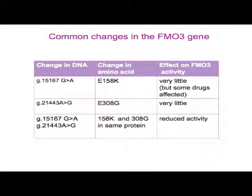What might be the consequences of these general changes? For E158K, most of the literature indicates there's very little difference whether you have an E or a K at this position, though some drugs have been shown to be affected. For E308G, having an E or a G at position 308 also has very little effect alone. However, when you have a 158K and a 308G on the same FMO3 protein together, we find a reduced activity — those two changes occurring together produce a reduced activity.